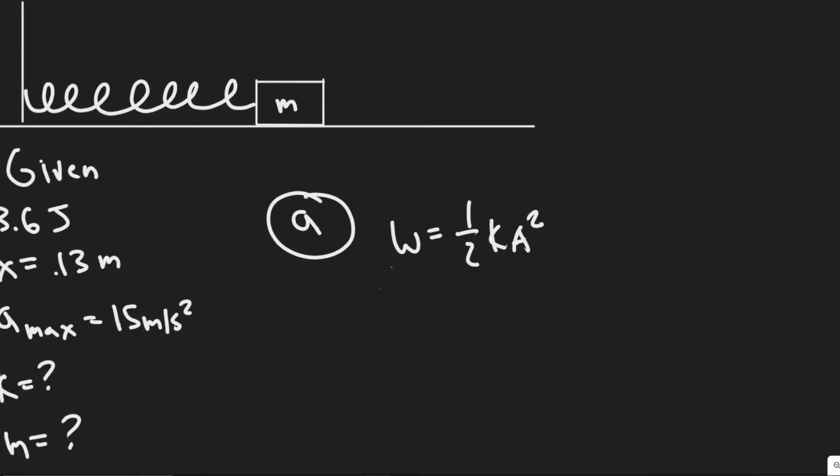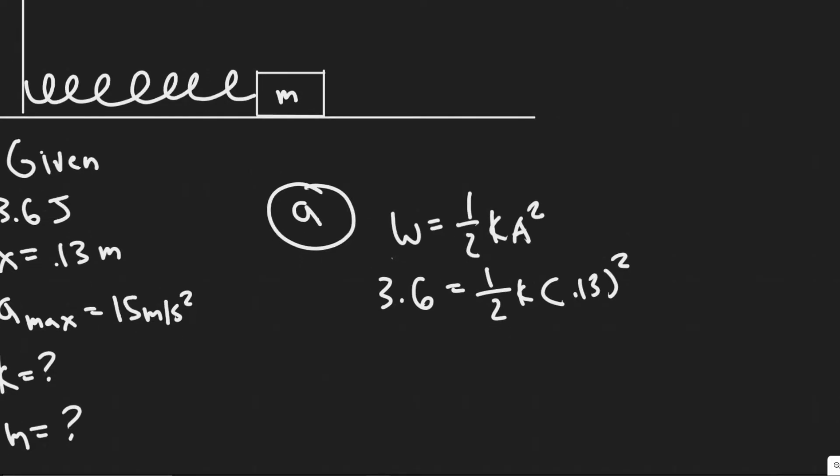Plugging this stuff in, 3.6 joules equals one half times K multiplied by the distance compressed, 0.13 squared. So I would multiply both sides by 2 to get rid of the one half. So 3.6 times 2, that is 7.2 equals K times 0.13 squared.